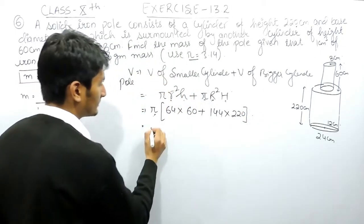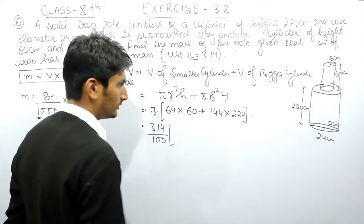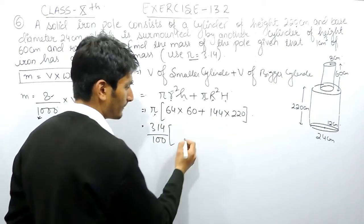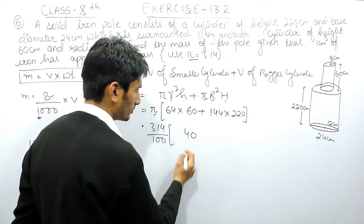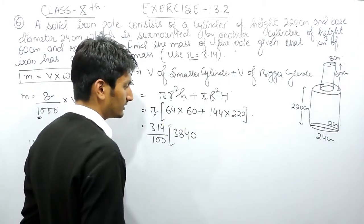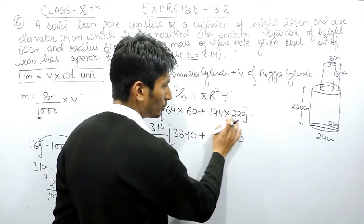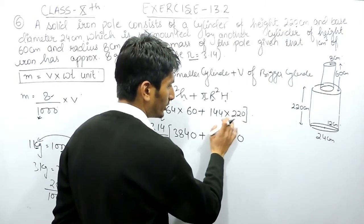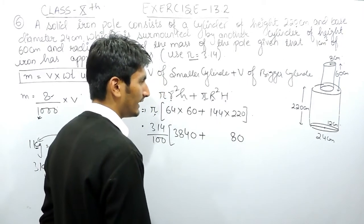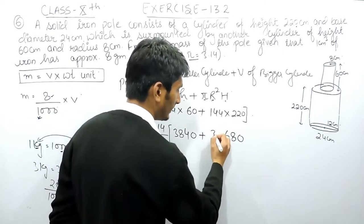Now use the value of pi as 3.14, which can be written as 314 upon 100. First solve the two bracket values: 60 multiplied by 64 gives 3840. For the second term, 220 multiplied by 144 — working it out: 22 × 4 = 88, carry 8; 22 × 4 = 88 plus 8 = 96, carry 9; 22 × 1 = 22 plus 9 = 31 — giving 31680.